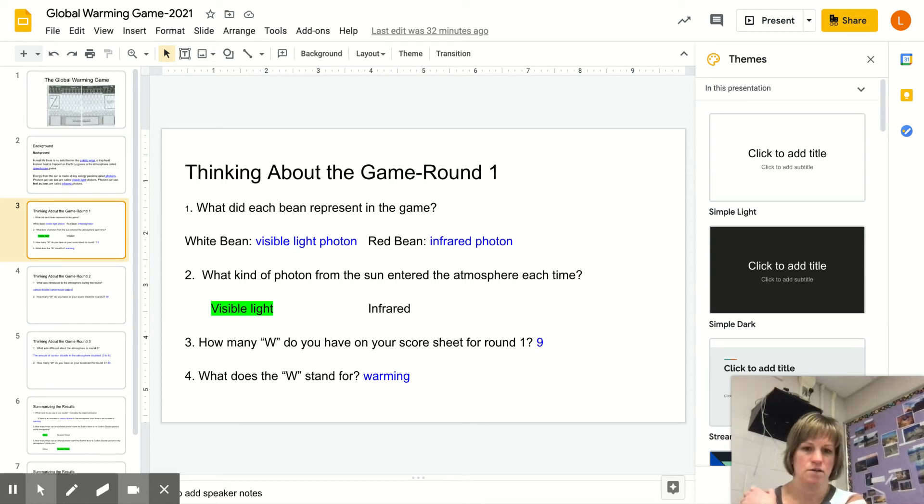Each bean represented what? The white bean was visible light—a photon energy packet coming from the sun that we can see. When there was a switch to a red bean, it was when heat was given off. We call that an infrared photon. Those are the only right answers there. Fix it if necessary. Now, what kind of photon from the sun entered the atmosphere each time? Visible light. Remember, we started with 12 white beans coming from outer space, from the sun, heading to our atmosphere.